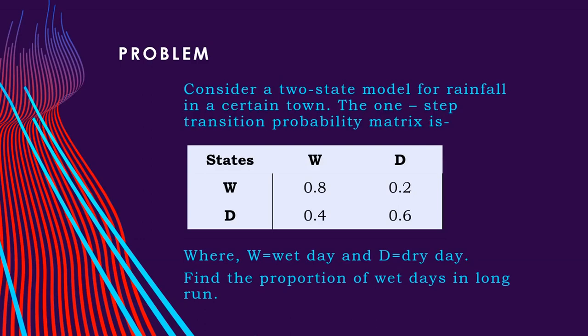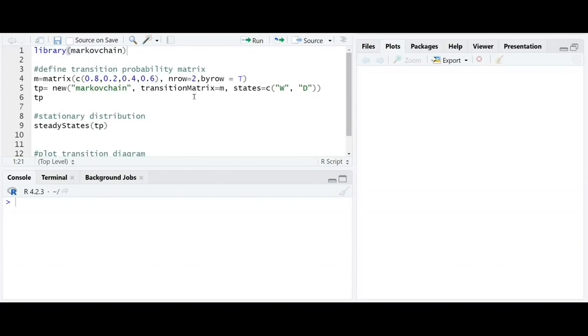The question is find the proportion of wet days in long run. Now let us look at the codes for stationary distribution in R.